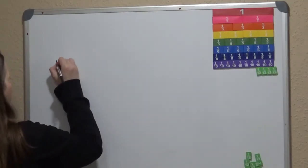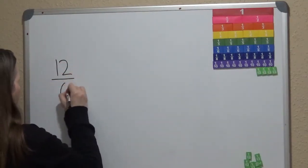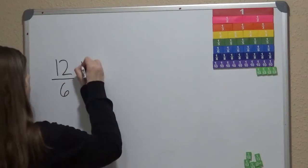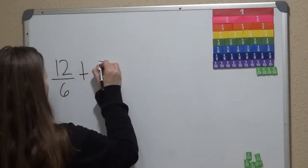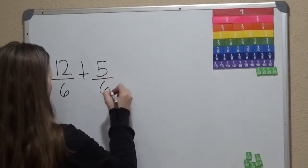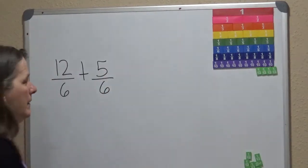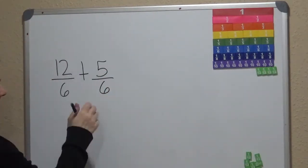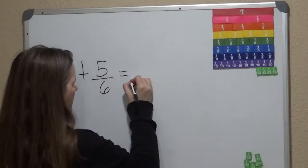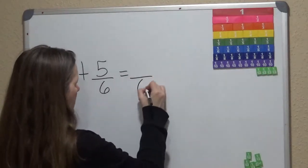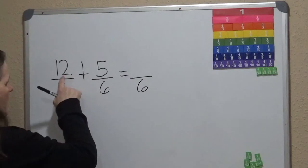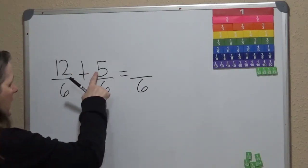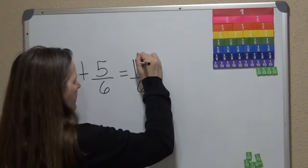If I have 12 sixths plus 5 sixths, my denominator stays the same when I'm adding. I leave the denominator the same and just add my numerator, which is the top number. So 12 plus 5 gives me 17 sixths.